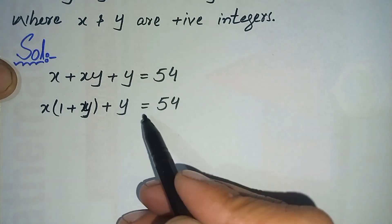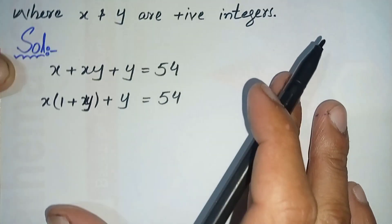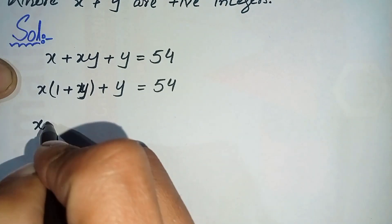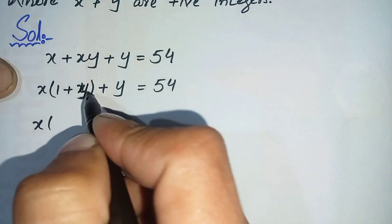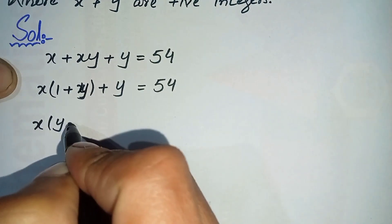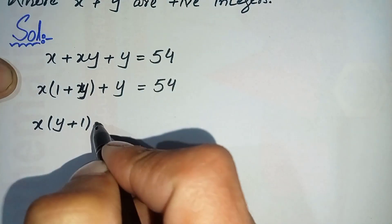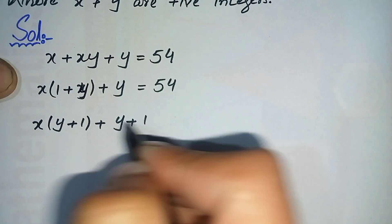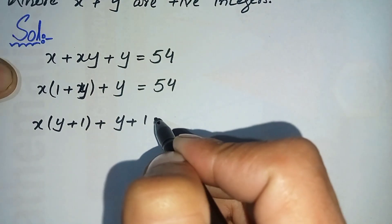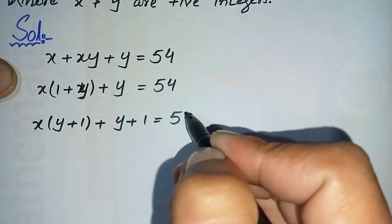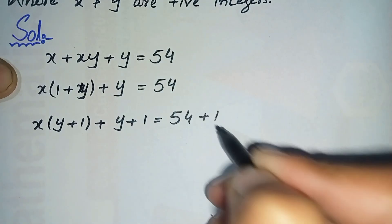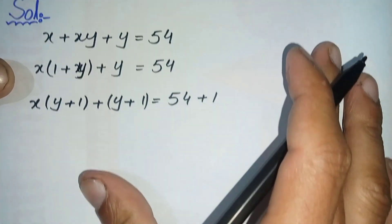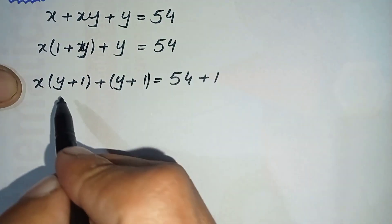To make (1 + y) a common factor, I will add 1 to both sides. The equation becomes x(1 + y) + (y + 1) = 54 + 1. Let us group these two terms in brackets.